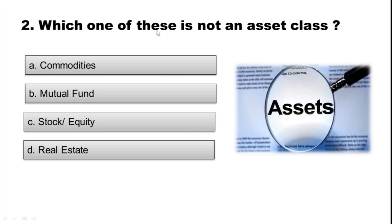Question 2: Which one of these is NOT an asset class? Option A: Commodities. Option B: Mutual fund. Option C: Stock or equity. Option D: Real estate. The correct answer is Option B — Mutual fund, as mutual fund is an investment vehicle, not an asset class itself.